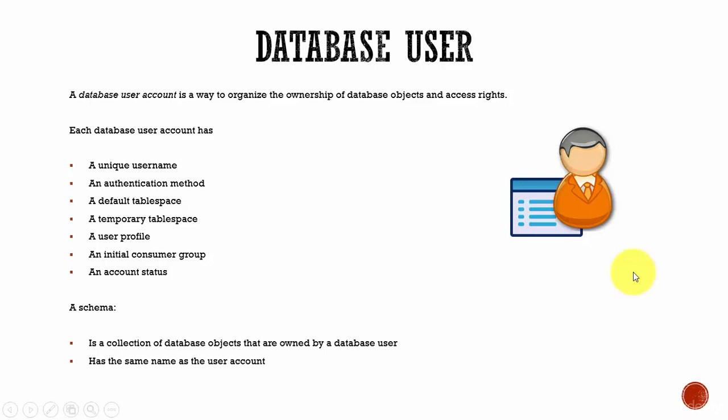A user has a default tablespace — whenever the user creates a table and stores data, this is the tablespace where the data is stored. There is also a default temporary tablespace to store all temporary data created by the user. Every user is assigned a profile to control access rights and set password restrictions. The user account also has an initial consumer group used by the Oracle Resource Manager, and an account status indicating whether the account is open, locked, or expired.